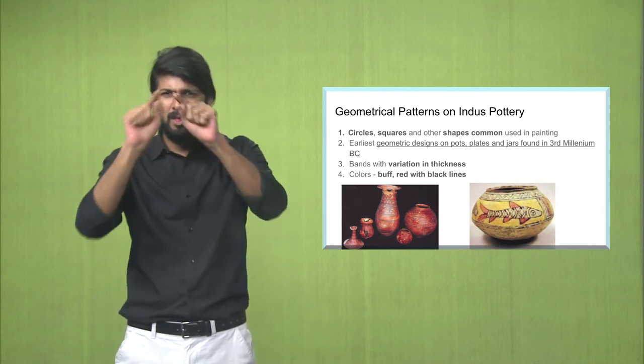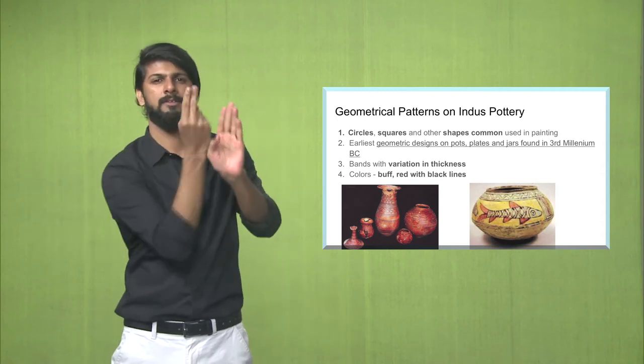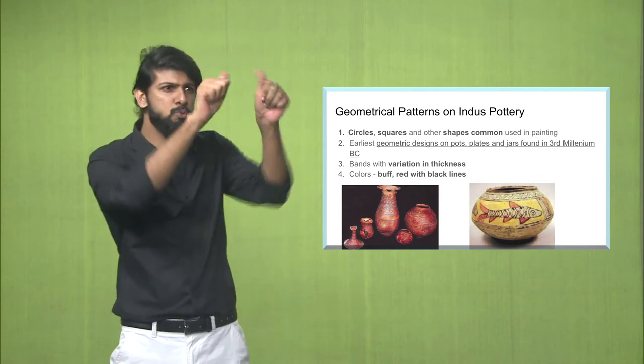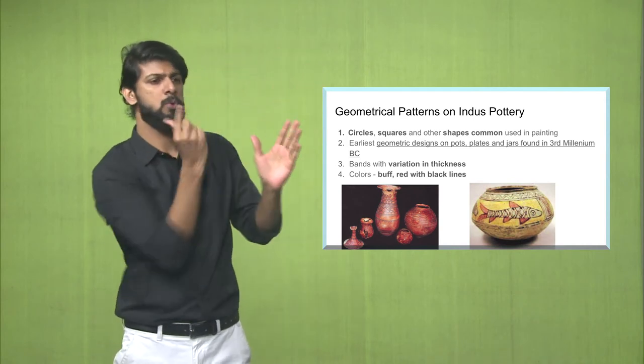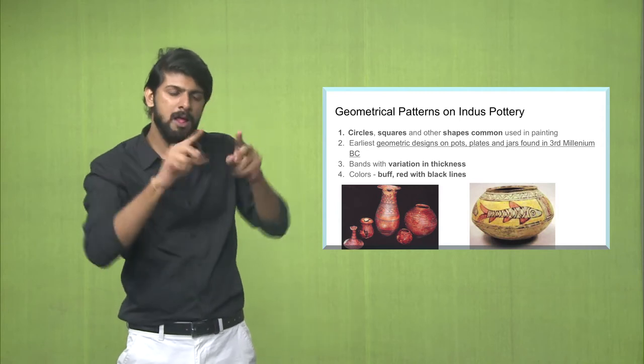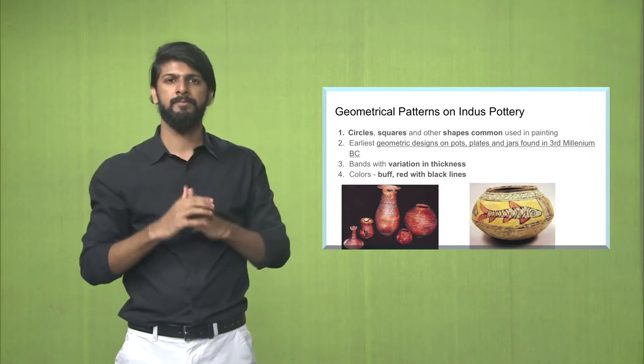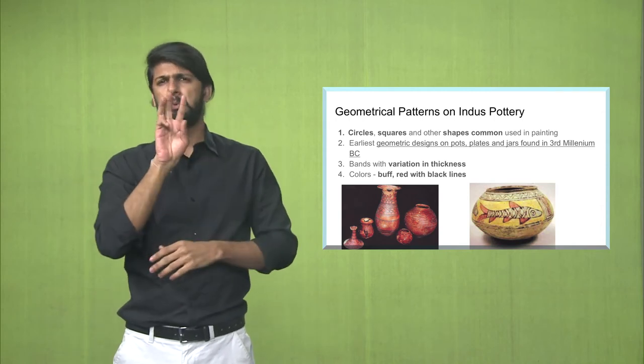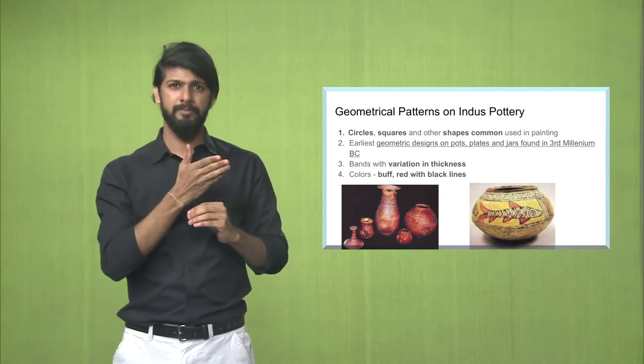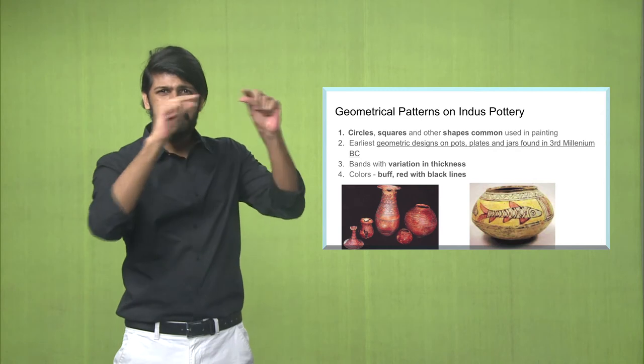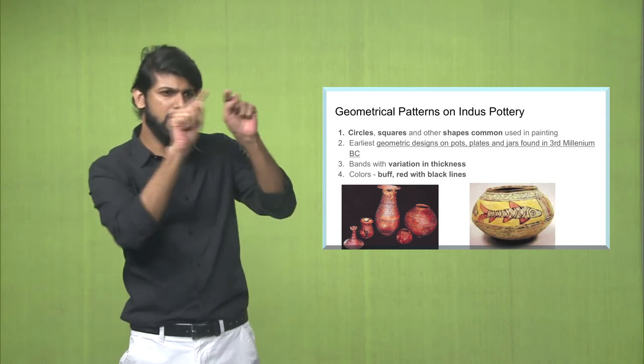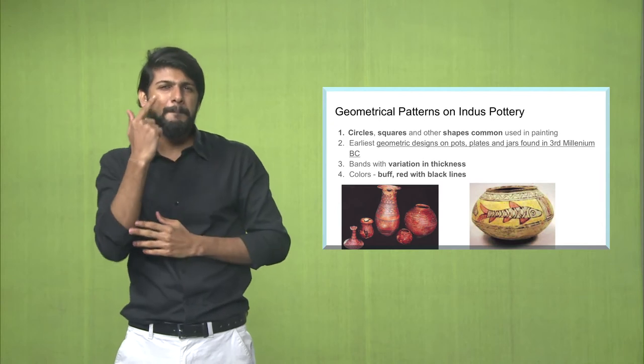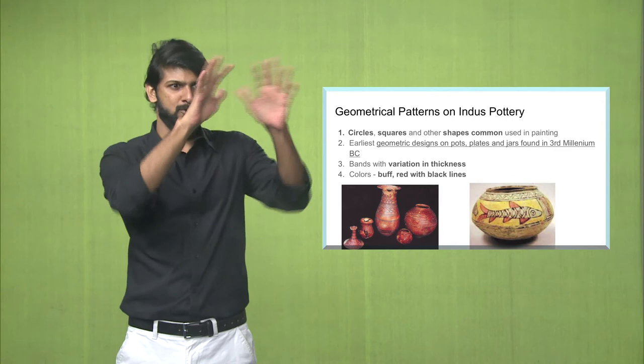Next we understand about the use of the geometrical patterns on the pottery. What kind of geometrical patterns were used? It was mostly circles, squares and other common shapes used in the painting on the pottery. The earliest geometric designs on the pots, plates, jars and various kinds of pottery was found in the third millennium, that is 3000 BC. All the pottery items will have various kinds of geometrical patterns and bands with variation in thickness, and the colors primarily were buff, red, and then black lines were added.